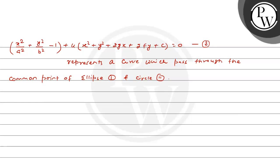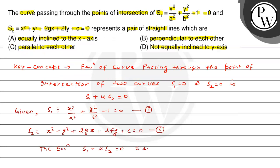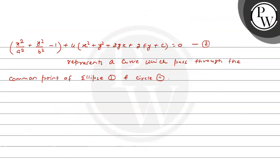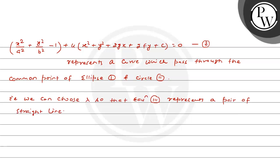अब हम lambda/k इस तरह से choose करें कि equation pair of lines को represent करे। We can get 3 values of K in general.